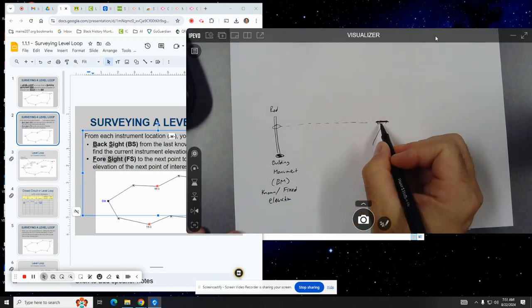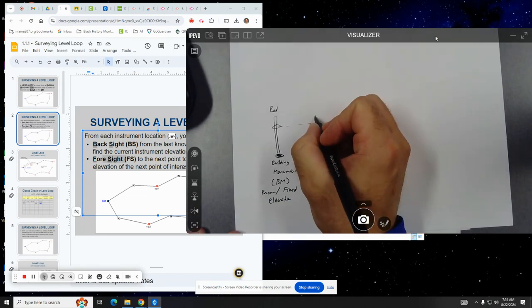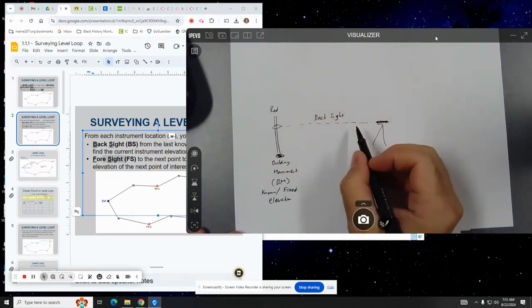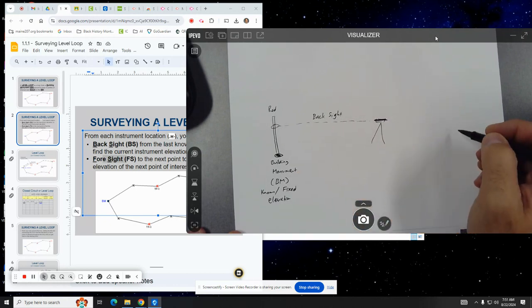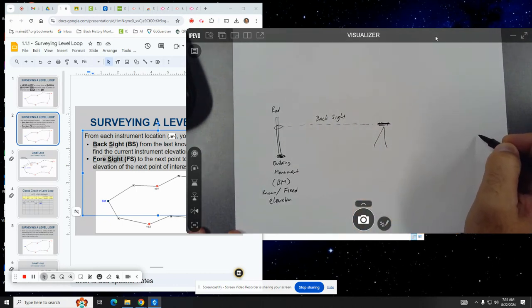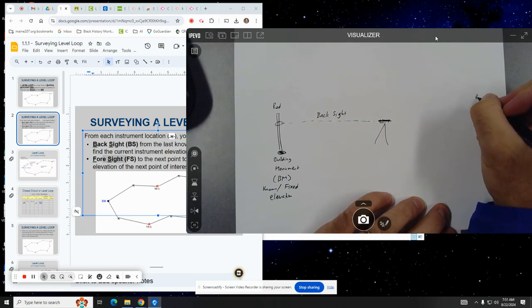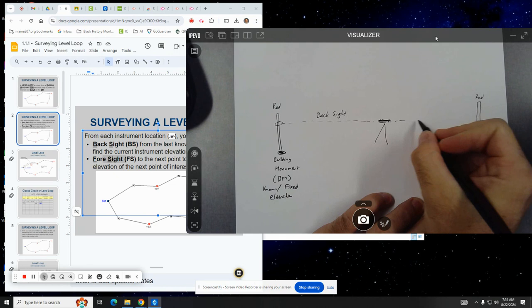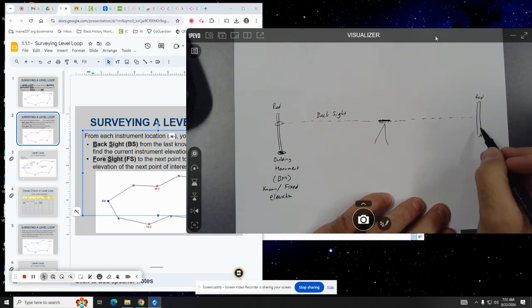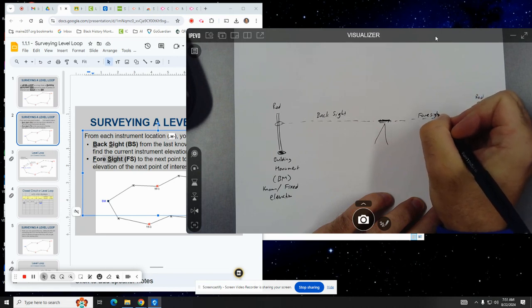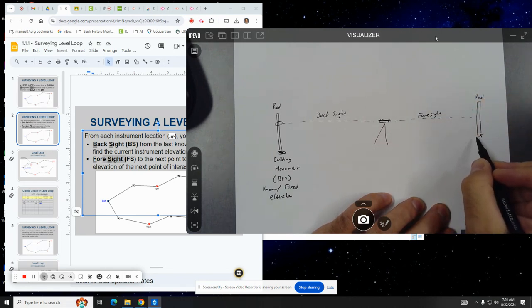So that's your back sight because you're looking from the instrument back to the rod. And then they'll turn around and say like, this is the location of their first point of interest. They'll put the rod here. And they're looking forward. So again, this is the rod. And so they turn and they look forward and they see what that is. And then that's their foresight. And that will tell them the elevation here.